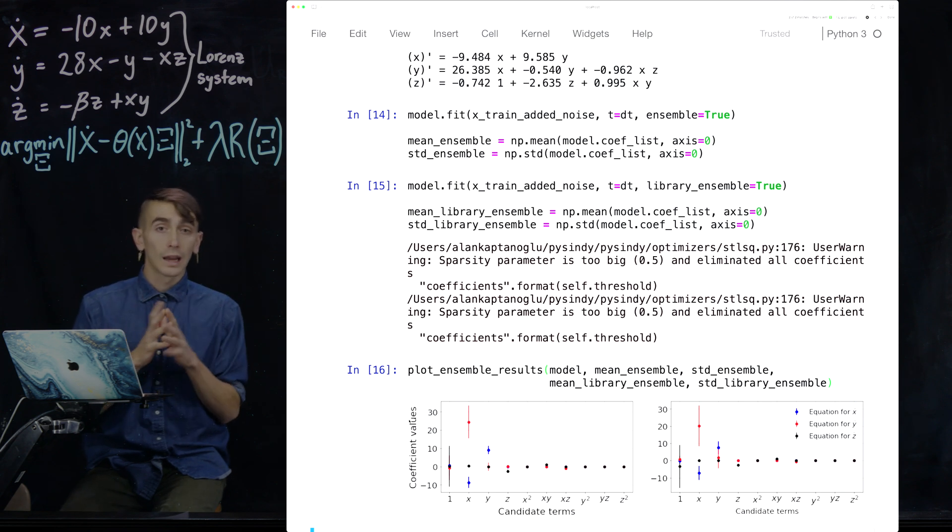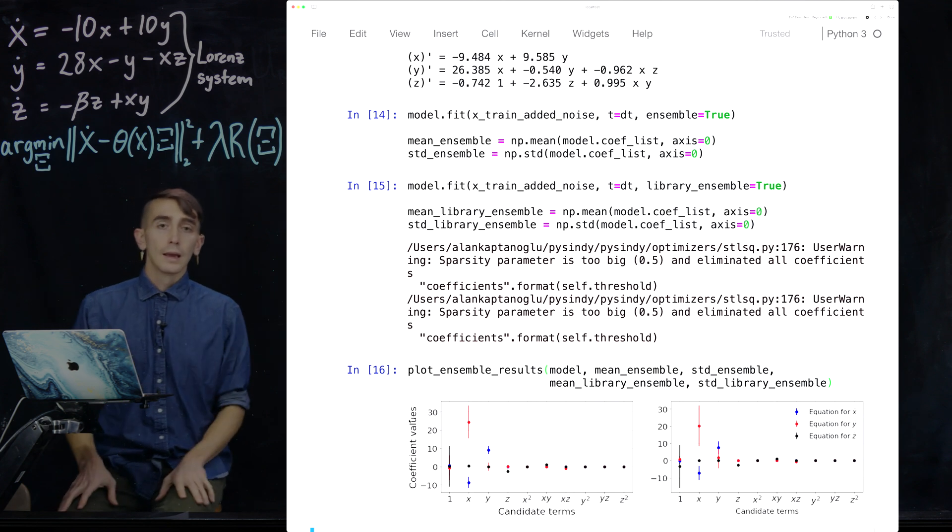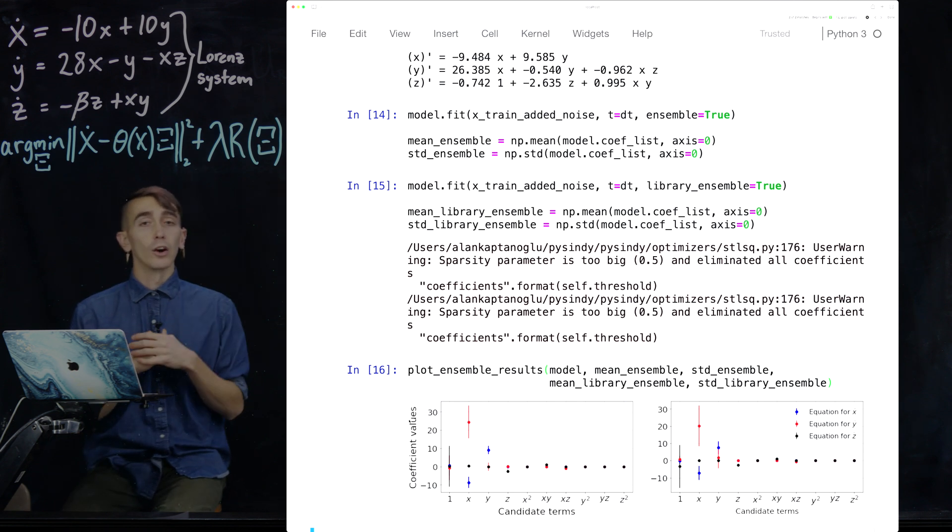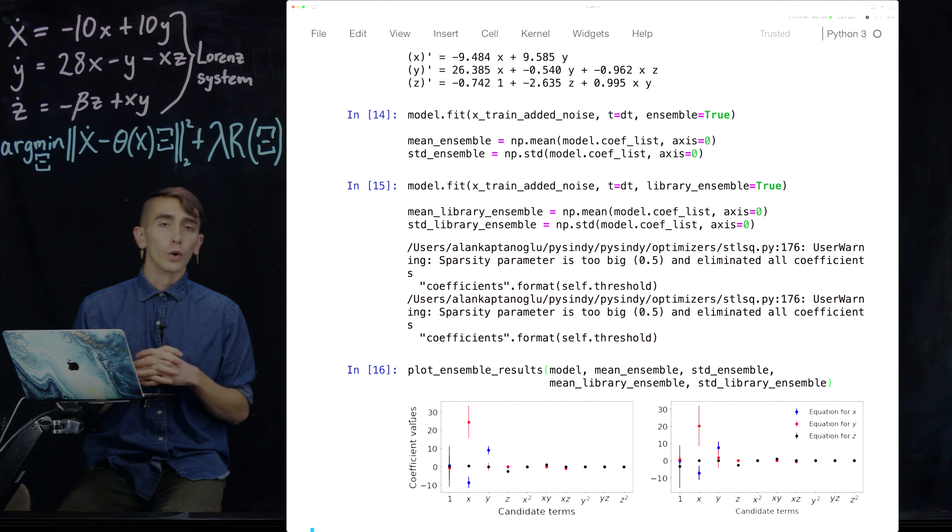So for this very small candidate library, when you truncate off terms, this is actually going to be a big problem. But this turns out to be less of a problem as your library gets bigger. So this makes sense that the library ensembling results had a bit bigger error bars and are a little worse than the ensembling.